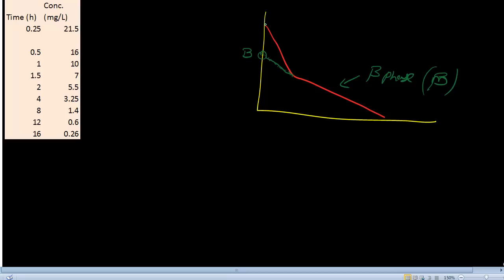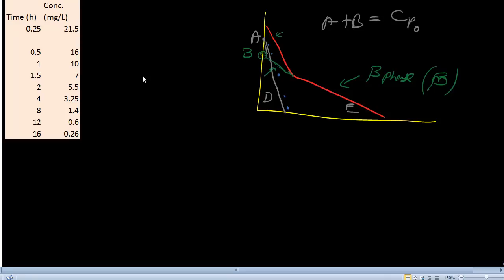After that, we subtract the extrapolated points — which are green — from the observed points — which are red. We then plot these subtracted points, which are called the residual lines, shown in blue. Once you find out the residuals — the difference between the extrapolated green line and the observed red line — you plot a line of the residuals. This residual line gives information about the distribution phase. The slope of the residual line gives us the distribution phase intercept, the value of A.